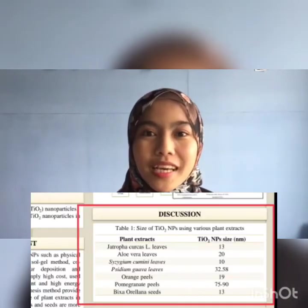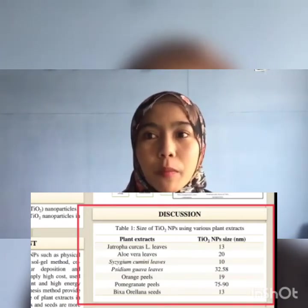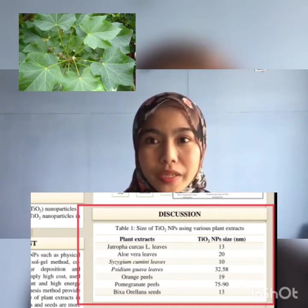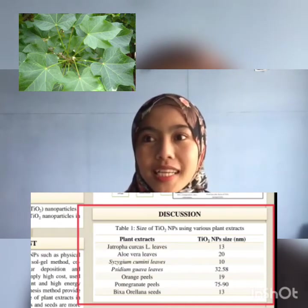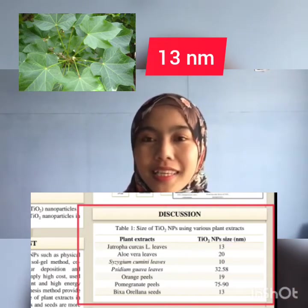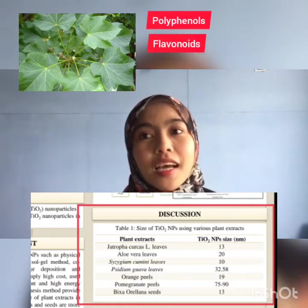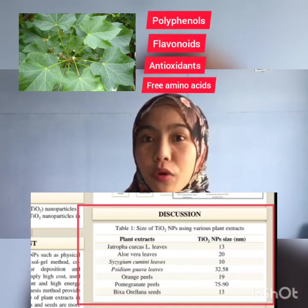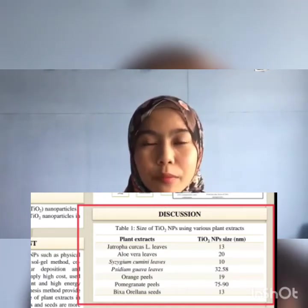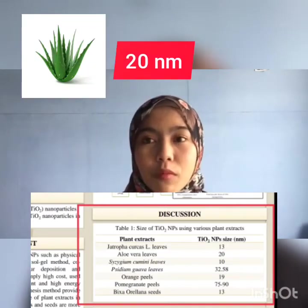The TiO2 nanoparticles were then ground using mortar and pestle to obtain the final powder form as shown in the figure. Table 1 shows the size of titanium dioxide nanoparticles synthesized using various plant extracts. A study by Pratap et al. focusing on green synthesis using Jatropha curcas leaf extract synthesized TiO2 nanoparticles. Jatropha curcas leaf can be obtained easily as the plant is abundantly available, making it low cost. The nanoparticles were at 13 nm. Another study by Rau et al. used the oldest herbal medicinal plant leaf, aloe vera. The size of nanoparticles was reported at 20 nm as shown in Table 1.